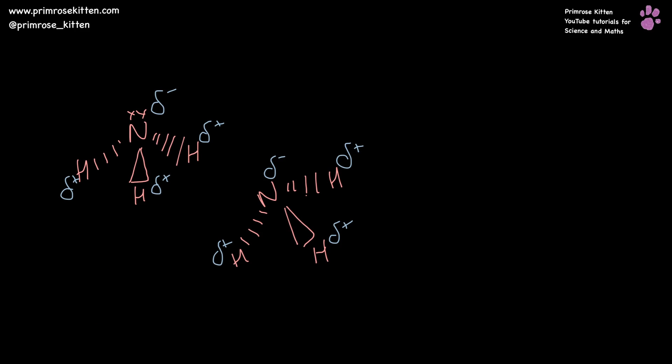A hydrogen bond is drawn as a dotted line between something that is positive and something that is negative.